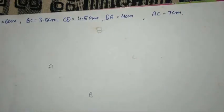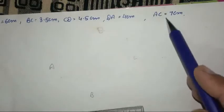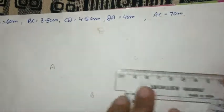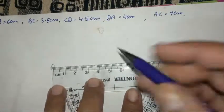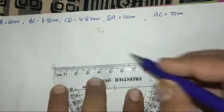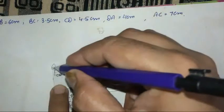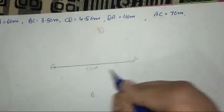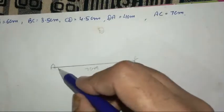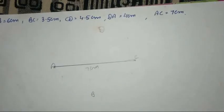Students, let's see what is given first. In the middle is AC. AC is given as 7 cm. So students, with the help of a scale, we take the 7 cm line. This is the 0 point and this is 7 cm. We take this line and write here 7 cm. This is corner point A and this is corner point C.